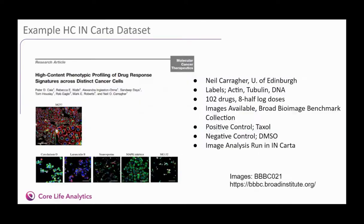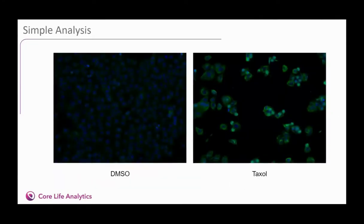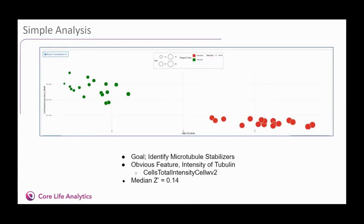The example I'm going to use is a publicly available dataset that we know very well at CoreLife Analytics, originally published by Neil Carrier at the University of Edinburgh. We think of it as cell painting light, as it uses three of the five cell painting labels. Cancer-relevant drugs and inhibitors with various mechanisms of action were tested in eight doses. We asked Will to help us analyze these images using Encarta, and I'll show you a subset of that dataset with 30 compounds. The positive control for this screen is the microtubule stabilizer Taxol. Let's start with a very simple analysis — looking for compounds with the same mechanism of action as Taxol.